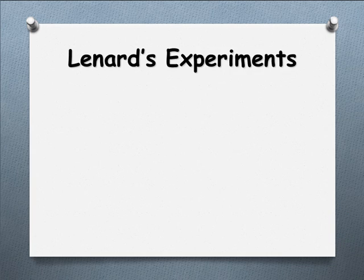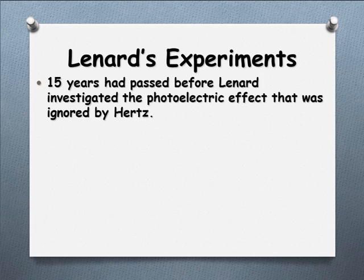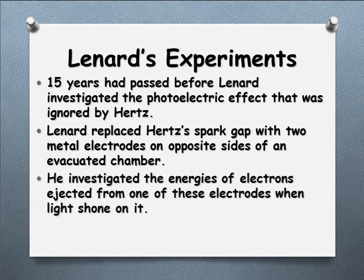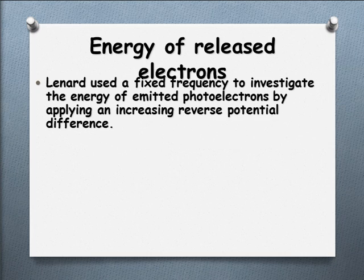Lenard's experiments followed on from what Hertz had stumbled upon — it was 15 years since Hertz had discovered this photoelectric effect, but Hertz had effectively ignored it and didn't investigate further. Lenard came along and replaced the spark gap, put a couple of metal electrodes in a vacuum chamber, and then investigated the different energies of the photoelectrons when he shone light on it, using a fixed frequency.